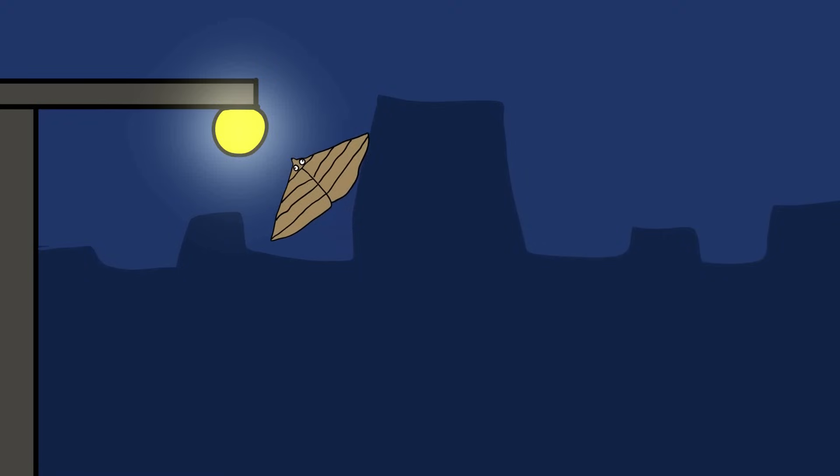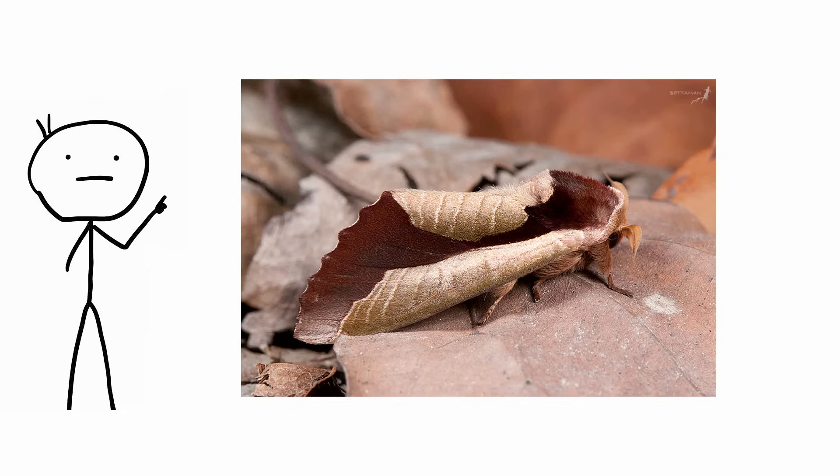While flying, U. meticulodina looks just like any other idiot moth smashing its head repeatedly against a light. But when it lands, it looks like something completely different.